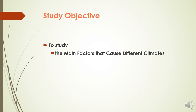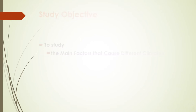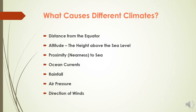My dear students, today our study objective is to study the main factors that cause different climates. Temperature is a huge factor that determines the climate of a place. Temperature and climate of a place depend on some other factors too. These factors are: distance from the equator.